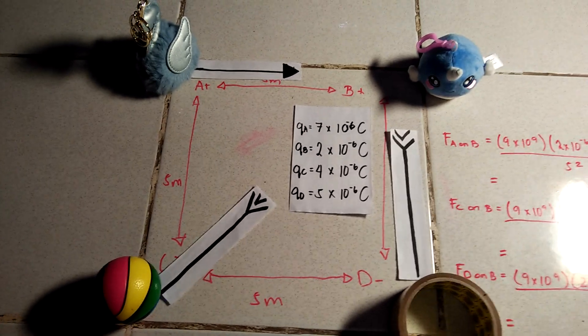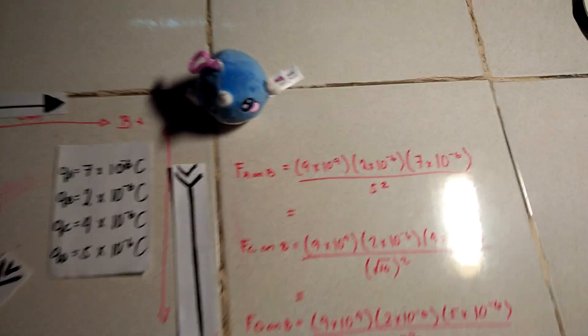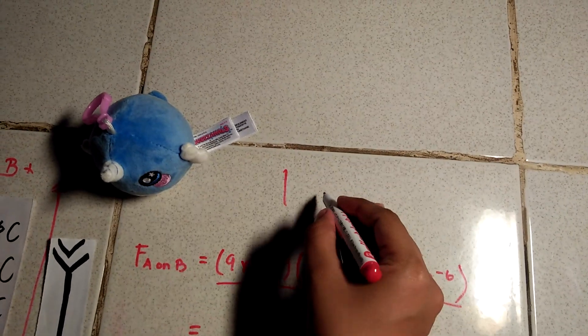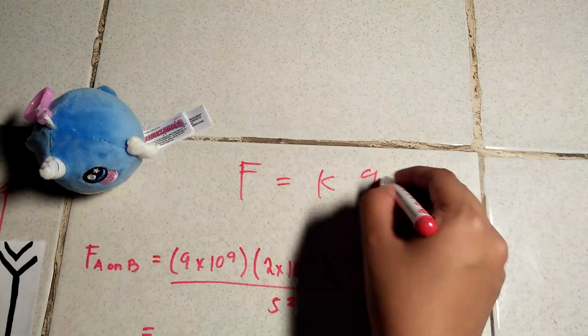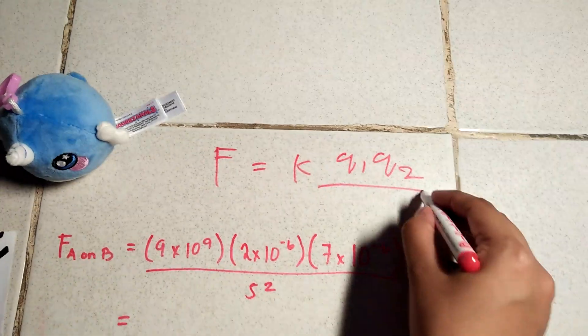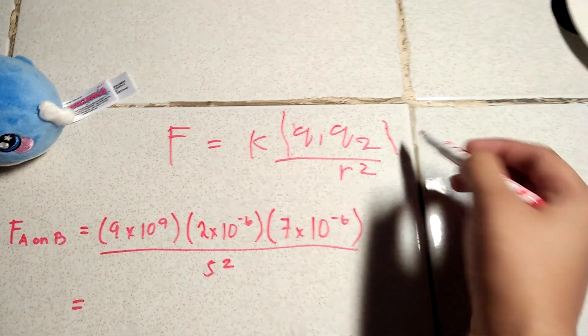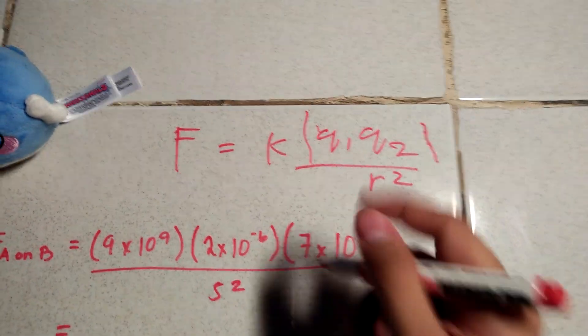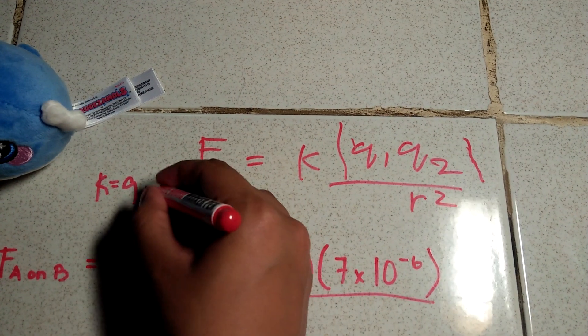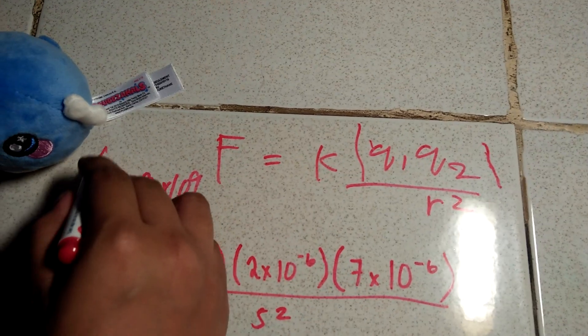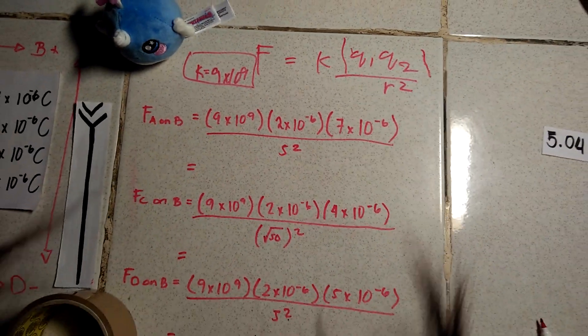So as a recap, we know that the formula of force, finding force, is F is equivalent to k, q1, q2, over the distance squared. And then we also know that the value of k is equivalent to 9 times 10 to the 9.